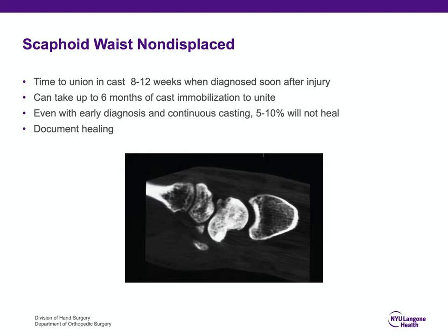Most will heal within eight to twelve weeks, but it can take up to six months of cast immobilization for the bone to unite. Even with continuous casting and early diagnosis, a very small percent of scaphoid waist fractures will not heal. It's important that when we do treat a scaphoid waist fracture with immobilization, we document healing, as it's very hard to see healing on a plain radiograph. I think you need to document healing with a CT scan when the cast is removed.